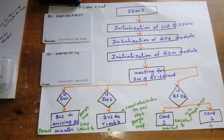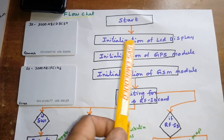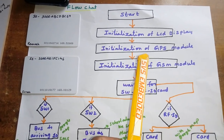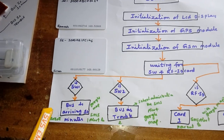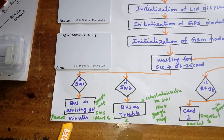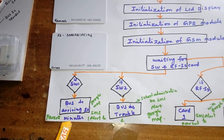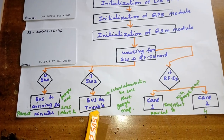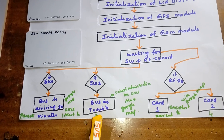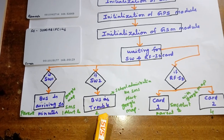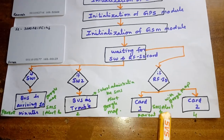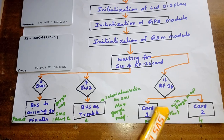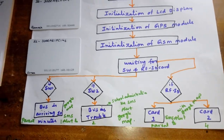Here is the flowchart: Start, initialization of LCD, GPS, and GSM, then waiting for RFID or switch button input. If the switch is pressed, it will send two SMS alerts to the parents with a Google Maps link. If the bus is damaged, it will send an SMS to the school administrator with the Google Maps link. If an RFID card is read, the student entering the school bus will have their attendance sent to the school.